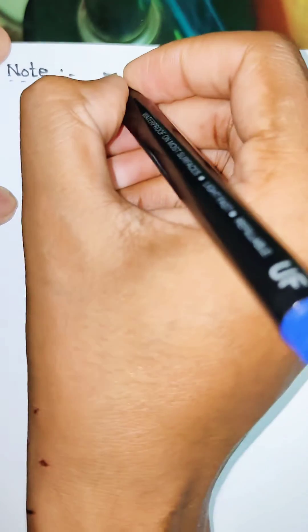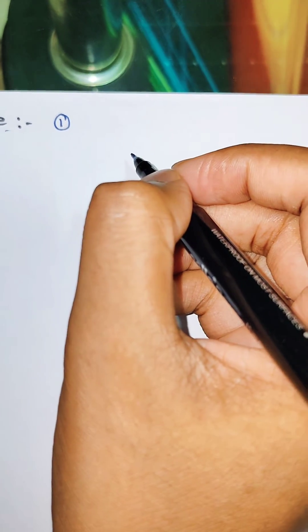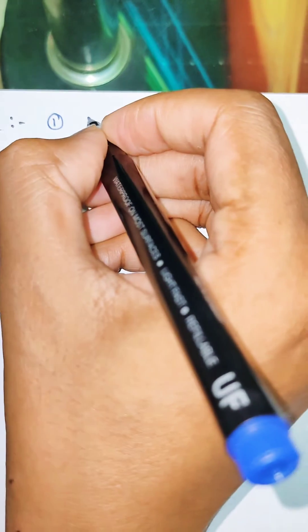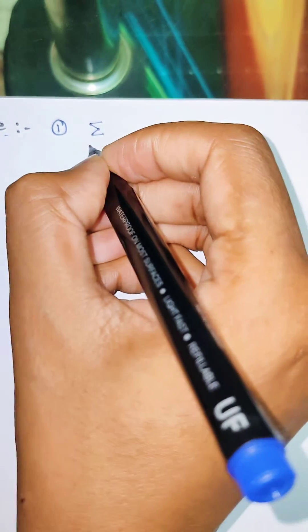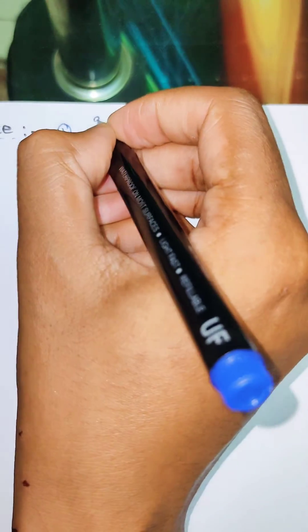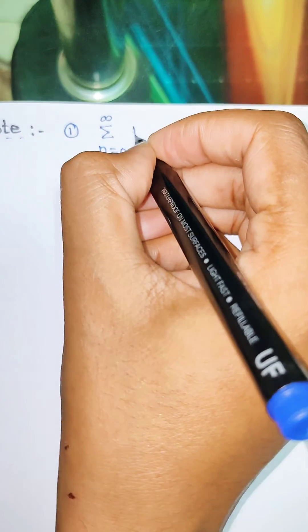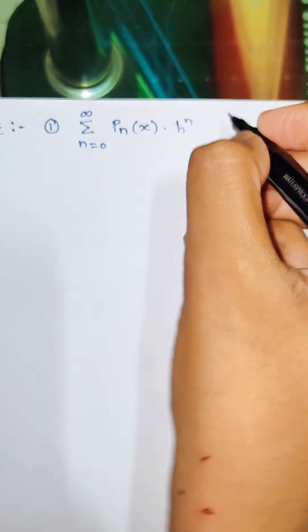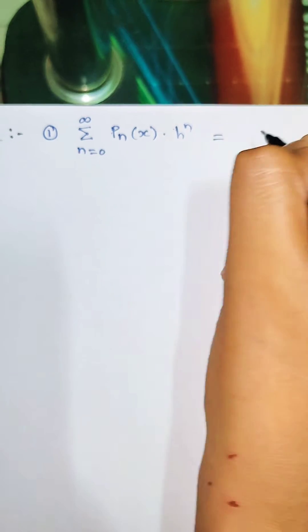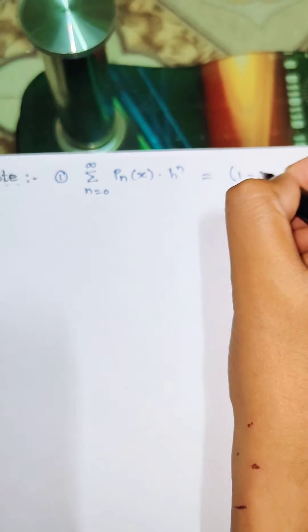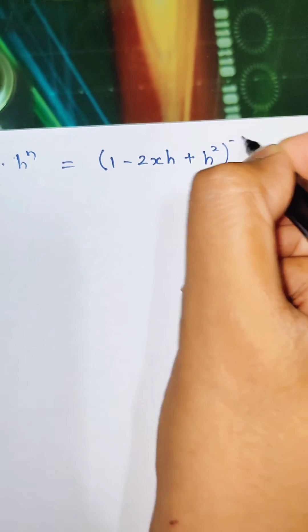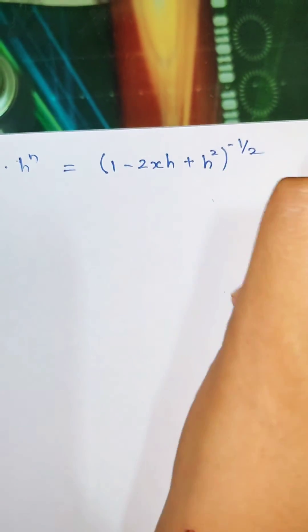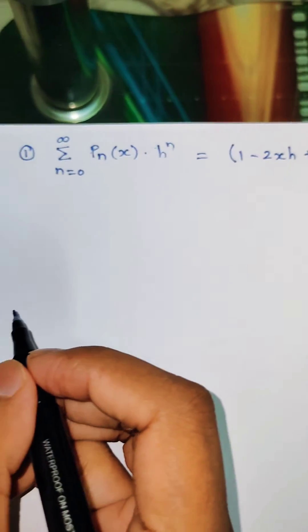The first result is for the generating function. The generating function is: summation from n equals zero to infinity of P_n(x) times h to the power n, equals (1 minus 2xh plus h²) to the power minus one-half. This is the first result you need to know.